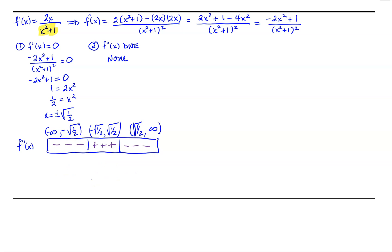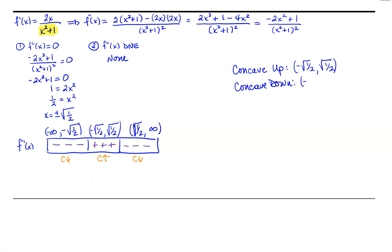Now we need to interpret our information. On the first interval, the second derivative is negative, so our function is concave down. On the second interval, the second derivative is positive, so our function is concave up. On the third interval, our function is concave down. Summarizing: the function is concave up on the interval from negative square root of 1/2 to positive square root of 1/2, and concave down on the interval from negative infinity to negative square root of 1/2, union the interval from square root of 1/2 to positive infinity.